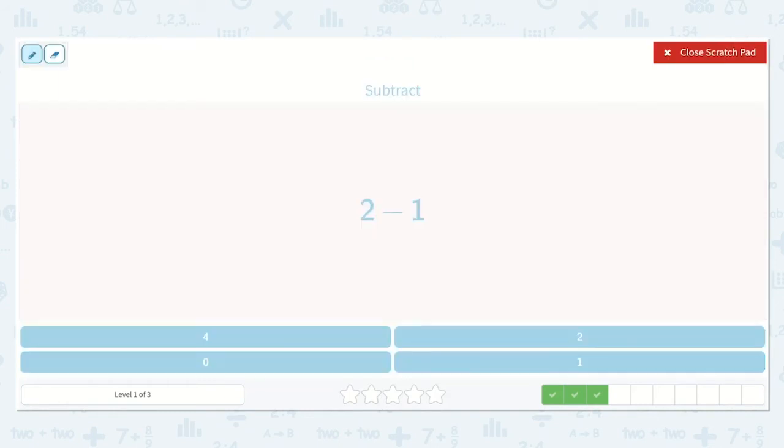Now I have 2 minus 1. Well, if I have 2 and I just cross one of them off, I will still have 1 left. Can you point to the 1 down below? Yes, it's right there.